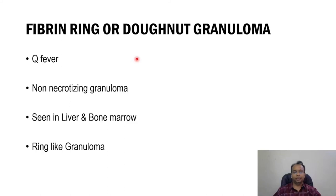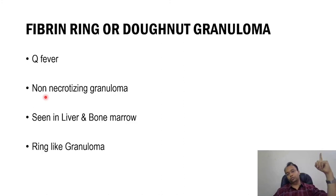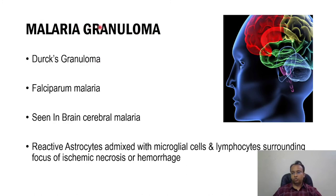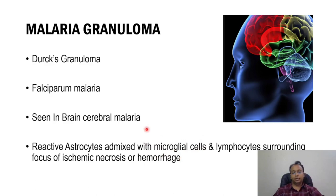Fibrin ring granuloma, also known as donut granuloma, is seen in Q fever. Here there will be a ring-like granuloma with a fibrin ring — it is a non-necrotizing granuloma, and caseating necrosis is not present, similar to sarcoidosis. It is seen in the liver and bone marrow. Malaria granuloma, known as Dirk's granuloma, is seen in the brain in cases of cerebral malaria. Classically, Plasmodium falciparum can lead to development of Dirk's granuloma. In the brain you can see reactive astrocytes admixed with microglial cells surrounding a focus of ischemic necrosis or hemorrhage.